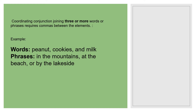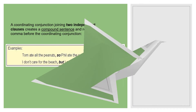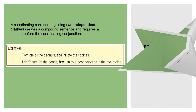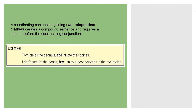You use a comma when you want to join a coordinating conjunction with three or more words or phrases. Basically, commas are required between elements. For example: 'peanuts, cookies, and milk' or 'in the mountain, at the beach, or by the lakeside' — because this is three or more words or phrases, you have to use commas to connect all the words and phrases.